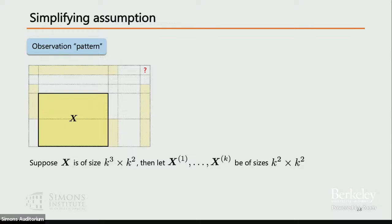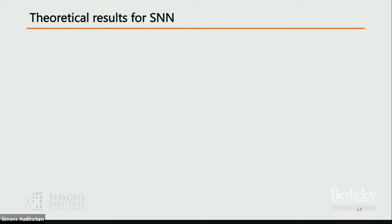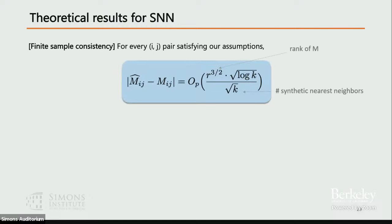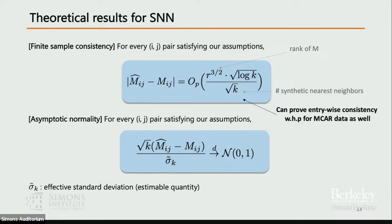Given these assumptions, here are the theoretical results for SNN. First, finite sample consistency: for every pair i,j satisfying the four assumptions, M-hat_ij minus M_ij scales as r²/2 divided by square root k, where r is the rank of M and k is the number of synthetic nearest neighbors. Second, asymptotic normality: if you appropriately normalize by square root k and divide by the effective standard deviation, the result goes to a standard normal, enabling confidence interval construction.